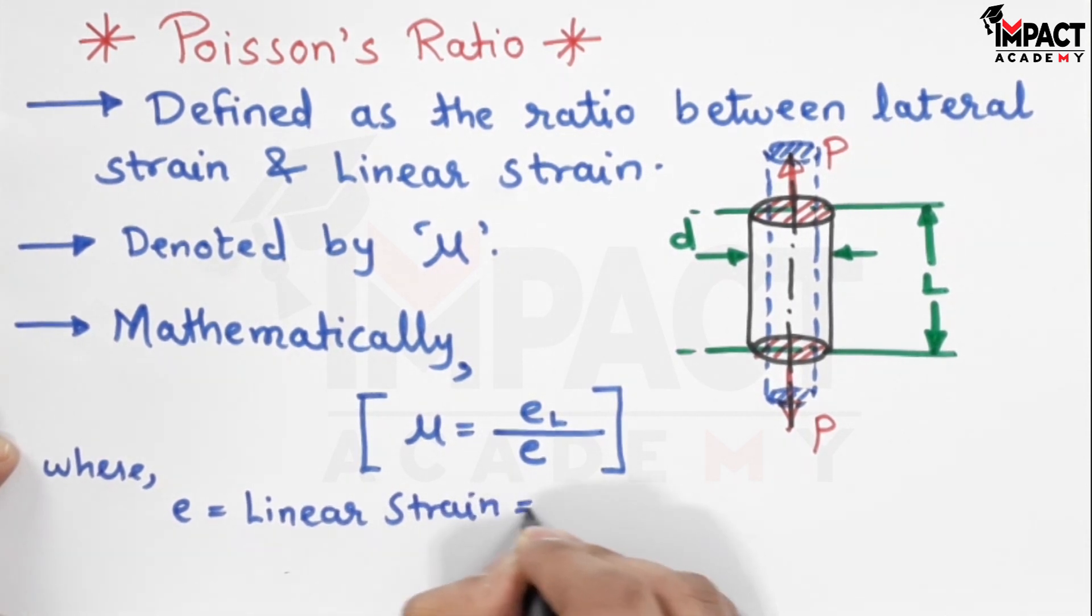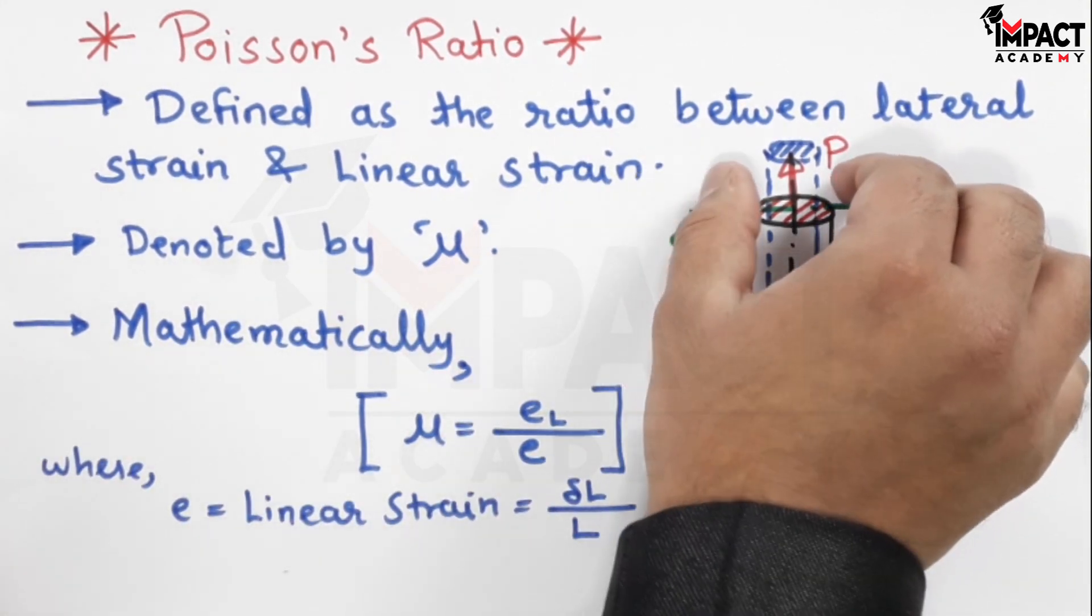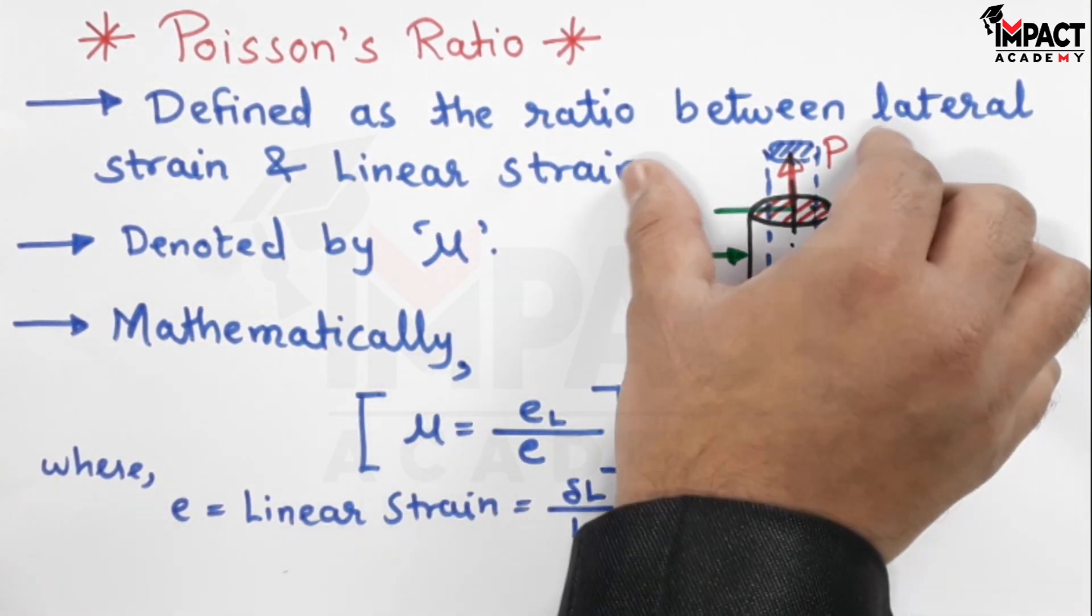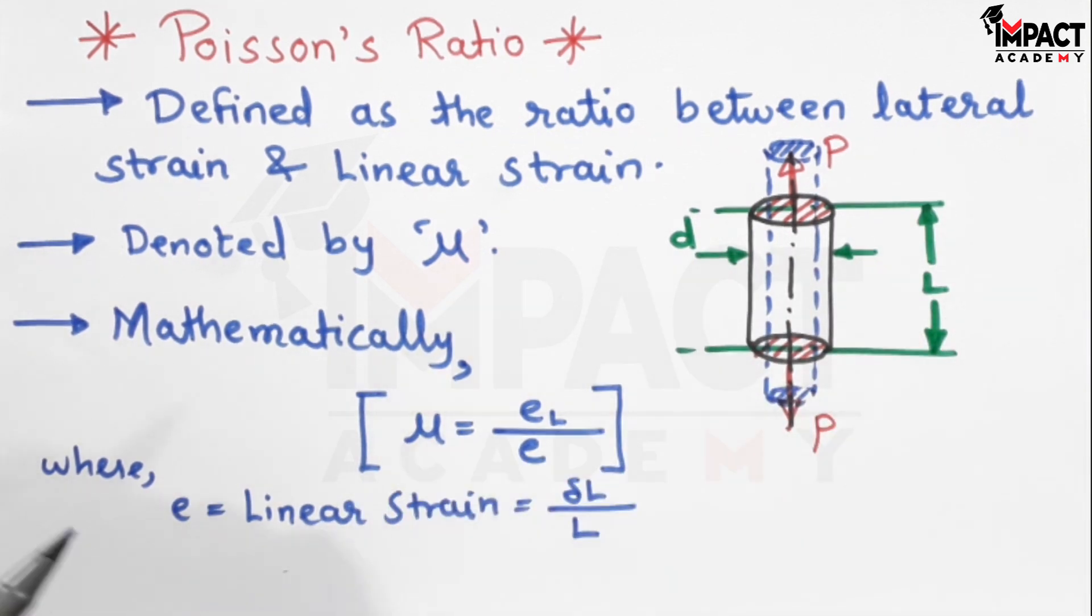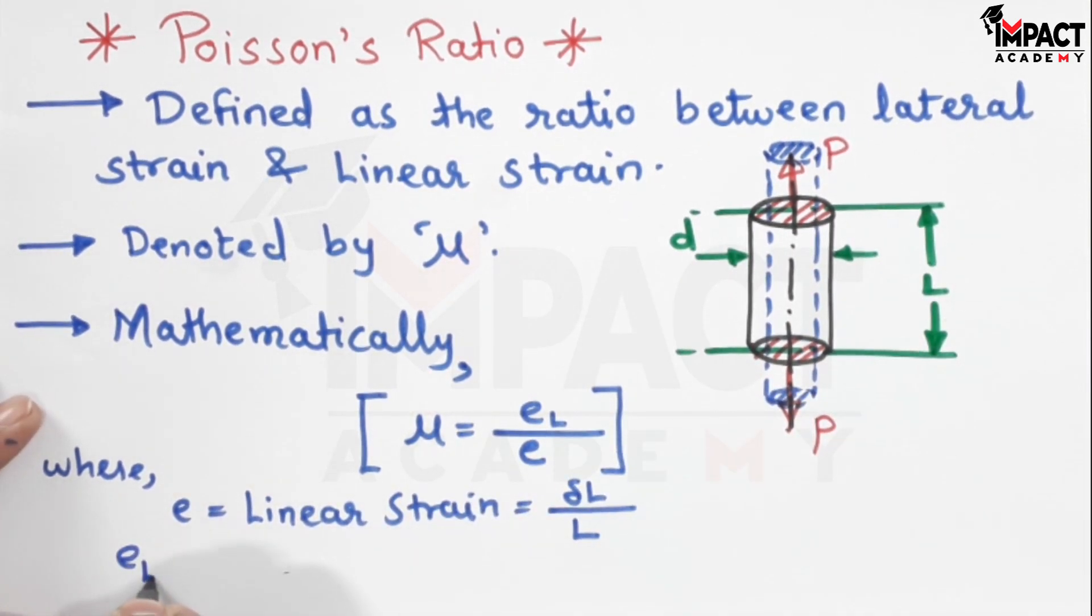Linear strain is denoted by change in length upon original length, whereas the decrease in diameter - now this dimension is lateral or perpendicular to the length - so that would be called as the lateral strain.